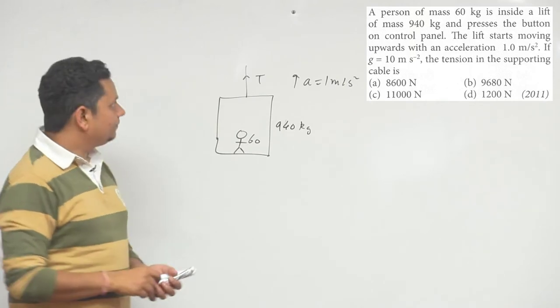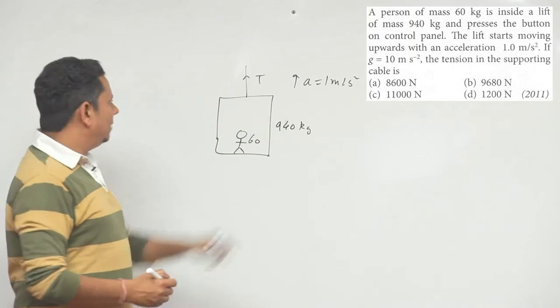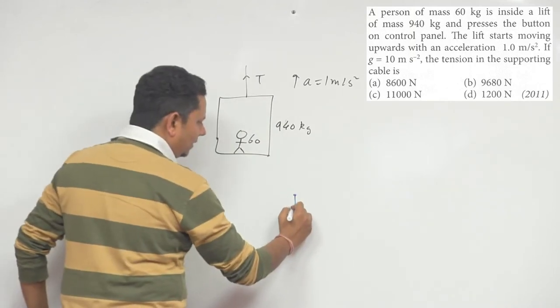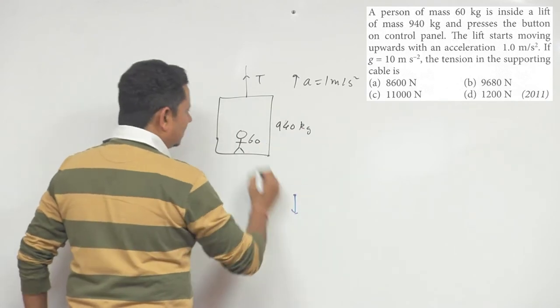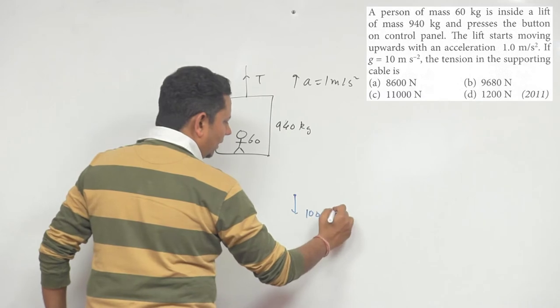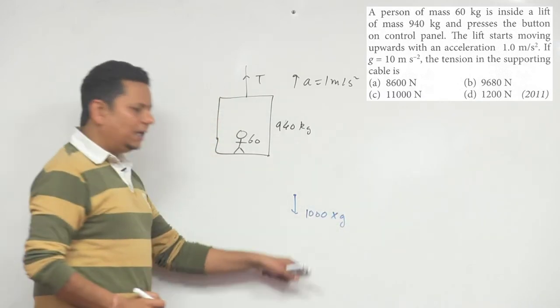If we make the FBD, the total mass is 940 plus 60 equals 1000 kg. The weight force is M times G downward.